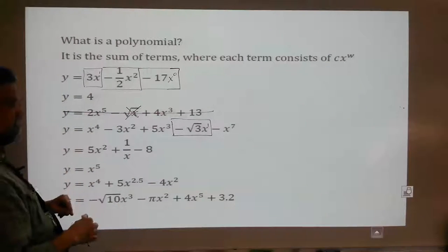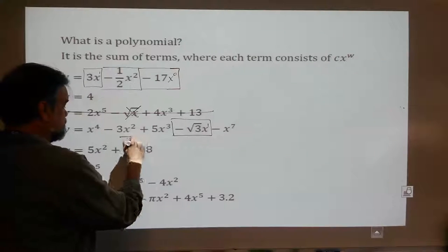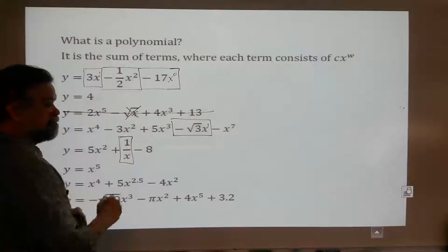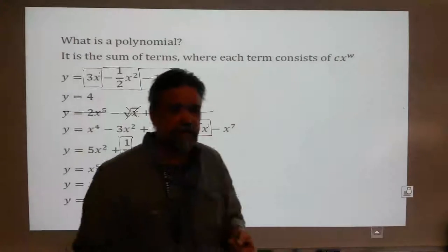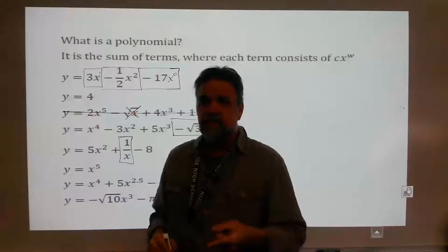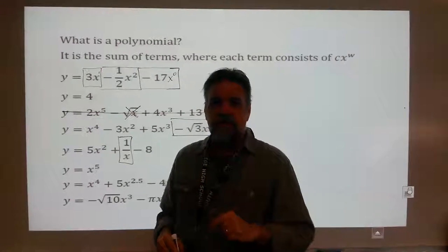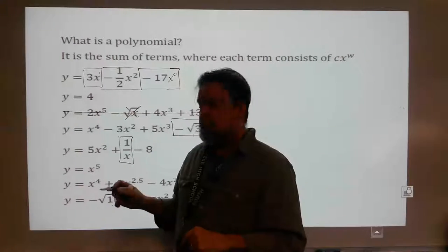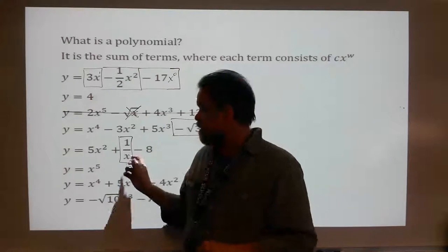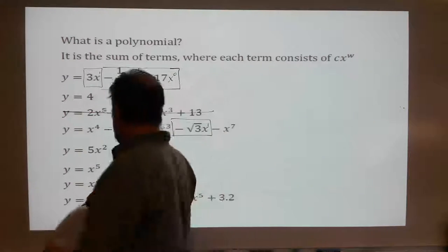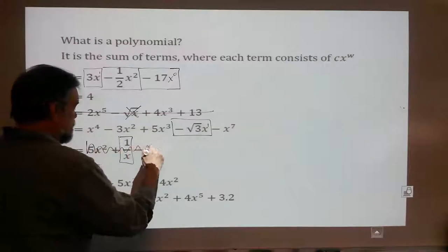Is this a polynomial? No. Why not? That guy — 1 over x. 1 over x is actually x to the negative 1 power, and negative 1 is not an acceptable exponent. The exponents have to be whole numbers: 0, 1, 2, 3 — not that. So no, this is not a polynomial.